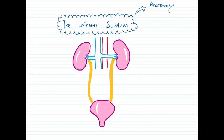Today we will be discussing the human urinary system. The human urinary system consists of the two kidneys, the ureters, the bladder, and the urethra. Each of these have their own specific function.